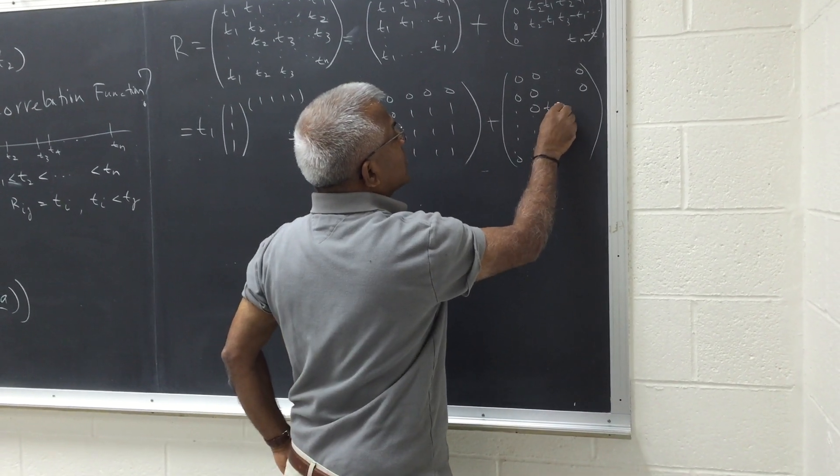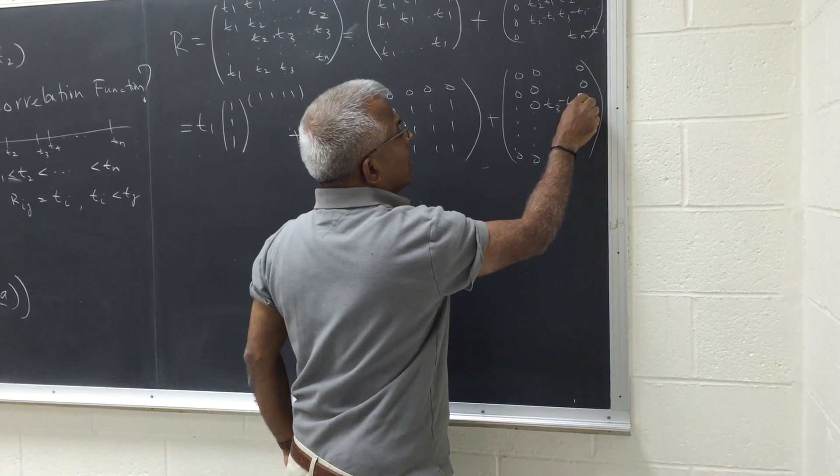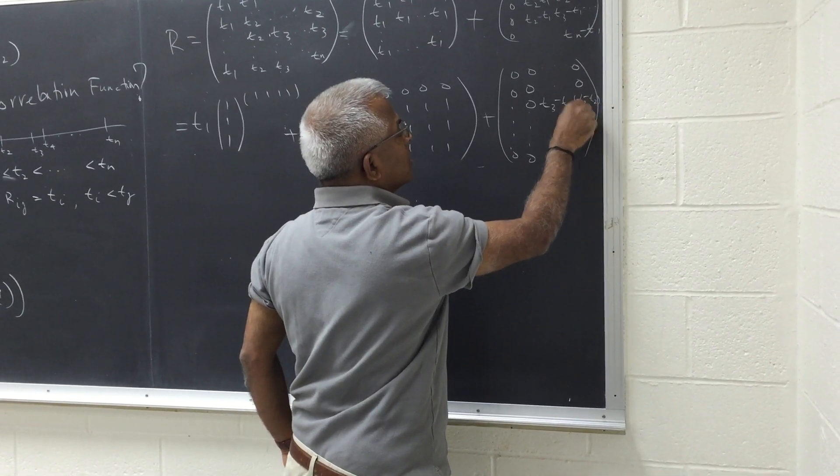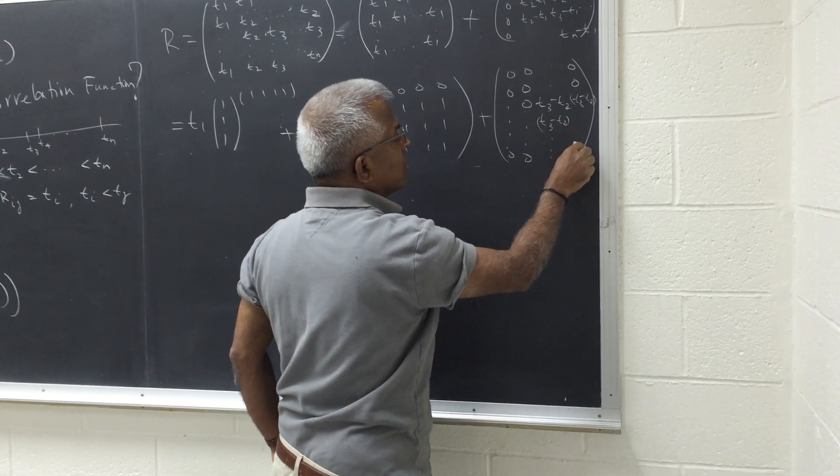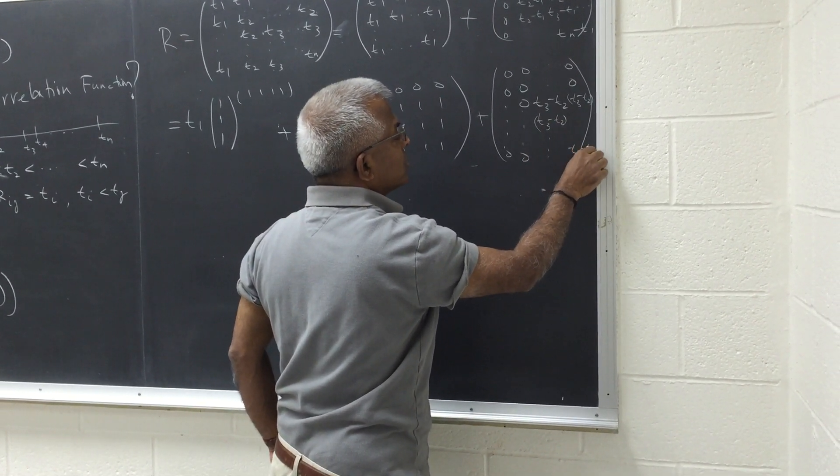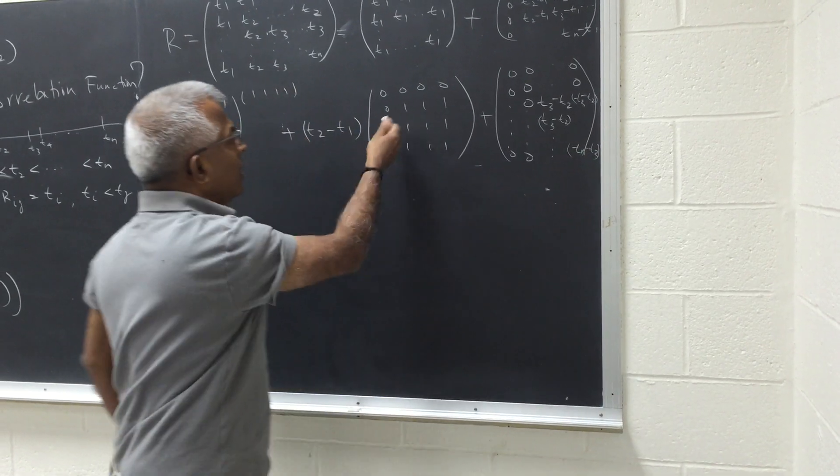So this entry is t3 minus t2, t3 minus t2, etc. Here also t3 minus t2 going this way. Last entry is tn minus t3. I am noting,